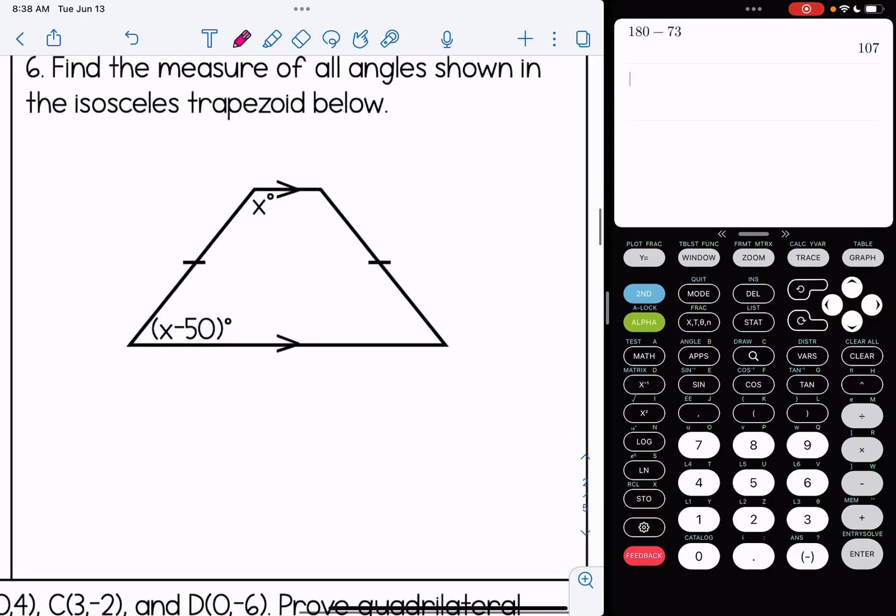Okay, number six. Find the measure of all angles shown in the isosceles trapezoid below. Well, the two angles that are marked in the picture are same side interior angles. So I know they have to add up to 180. I also know that these are going to be congruent, that I have the x and the x minus 50 on the right side as well. So x plus x minus 50 has to add up to 180. That's what it means to be supplementary.